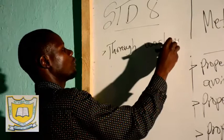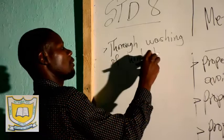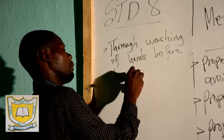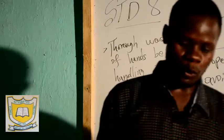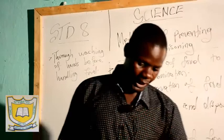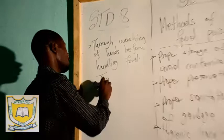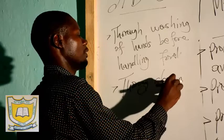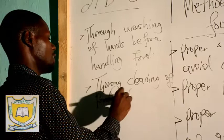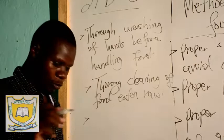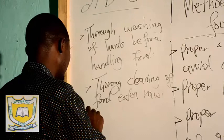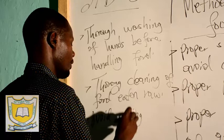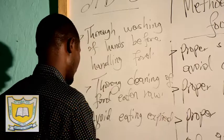Before you handle food, make sure that the hands have been thoroughly washed. Then there is cleaning of food which is eaten raw — thorough washing of food which is eaten raw. Then avoid eating expired food.